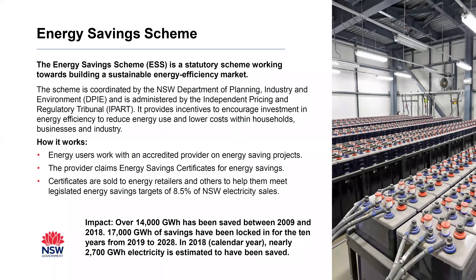The scheme works through accredited providers — ACPs — who work with energy savers on projects. For the energy savings that are made, energy saving certificates can be claimed. There's a whole set of rules to calculate those energy savings. There's a legislated target for energy retailers and others in New South Wales who sell electricity to buy and surrender those certificates. The target this year is 8.5% of their electricity sales. Since 2009, the scheme has verified 14,000 gigawatt hours of savings, and for methods with upfront savings built in, there's another 17,000 gigawatt hours already locked in for the next 10 years.